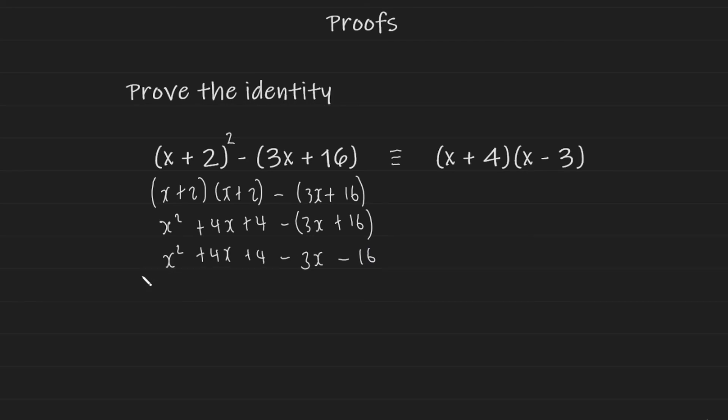And now let's simplify this expression here by collecting like terms. So I have the plus 4x minus 3x, which is plus x. And then I have the plus 4 minus 16, which is minus 12. And if you take a look at that x squared plus x minus 12, we have a value of 1 in front of the x and a minus 12. This can be factorized into two brackets.